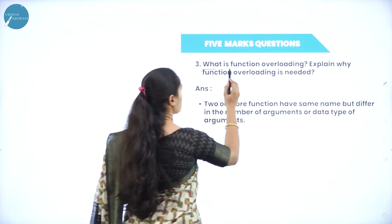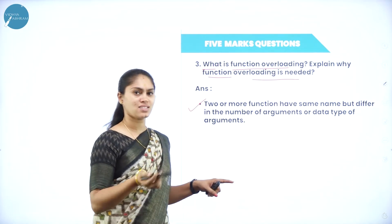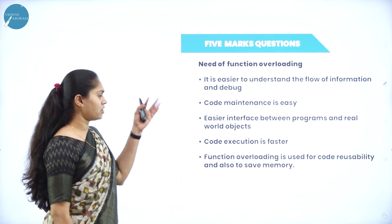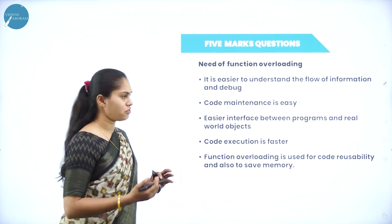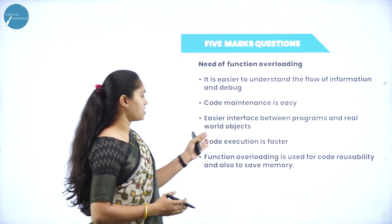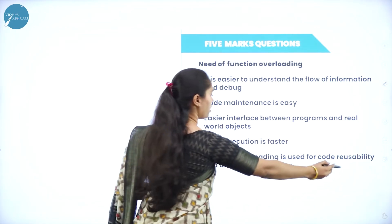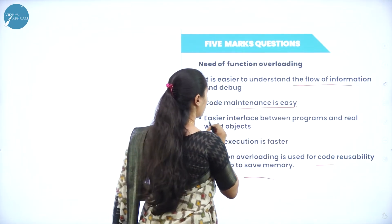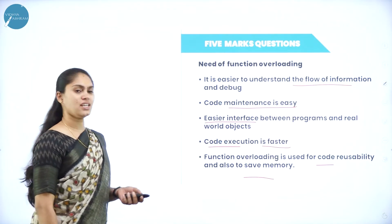Next question: what is function overloading? Explain why it is needed. If two or more functions have the same name but differ in number of arguments and type of arguments, that is considered function overloading. Its advantages: code maintenance is easy, easier to understand the flow of information, easy debugging, easy interface between program objects and real world objects, code execution is faster, supports code reusability, and it saves memory.